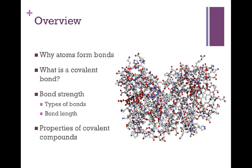Before we get started, you'll notice the picture over to the right. This is a very complicated covalent molecule known as hemoglobin, something you've seen in the past or heard about in your biology classes. This is an example of where this topic eventually is going to take us. In this very complex structure are all the basic ideas of what we're about to talk about today, as well as material we'll cover later on — things like polarity and VSEPR theory. This discussion today is the beginning of being able to understand complex molecules like hemoglobin.